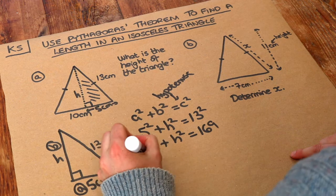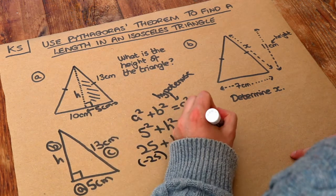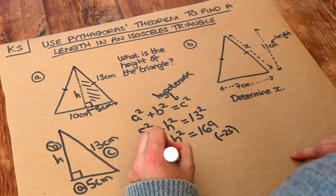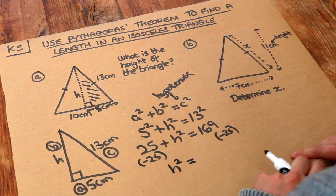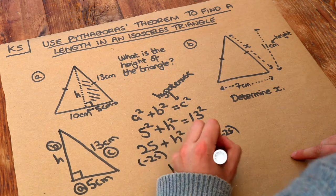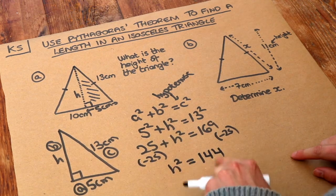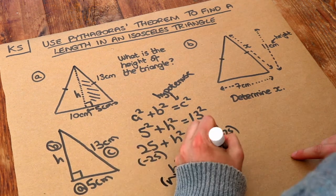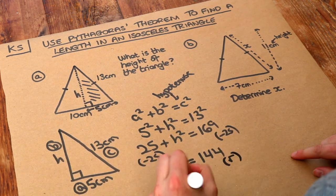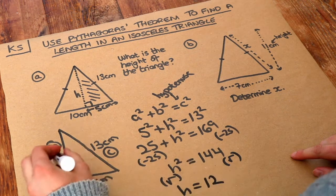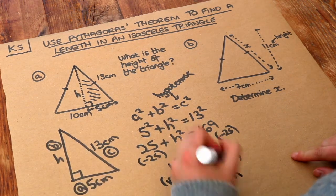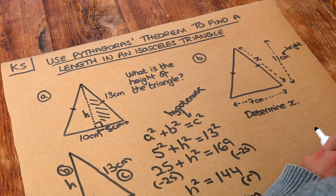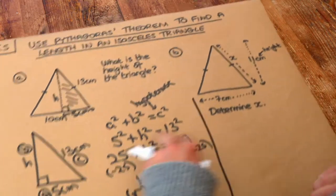Now h is being squared, then we're adding 25 to it to get 169, so we should subtract 25 from both sides. That leaves just h², and 169 - 25 = 144. Now h is being squared to get 144, so we square root each side of the equation. That gives us h = 12 centimeters. That's the final answer. We've worked out the height of that isosceles triangle.